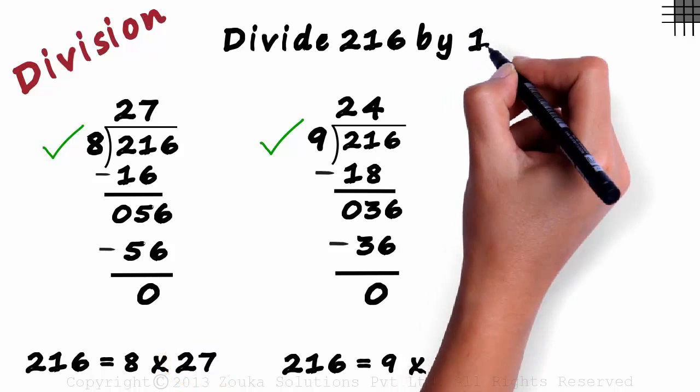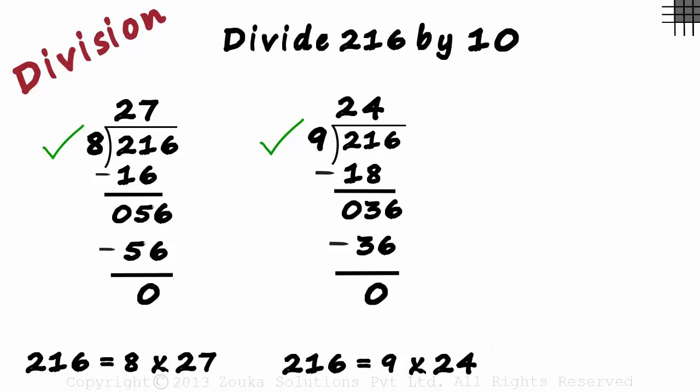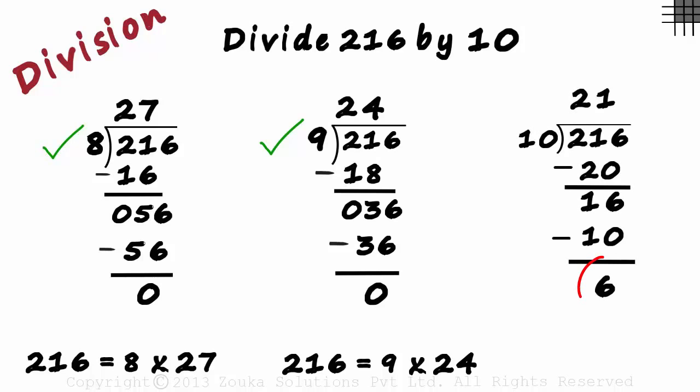What about 10? Is it a factor of 216? To find out, we divide 216 by 10. In this case, we get the remainder as 6.